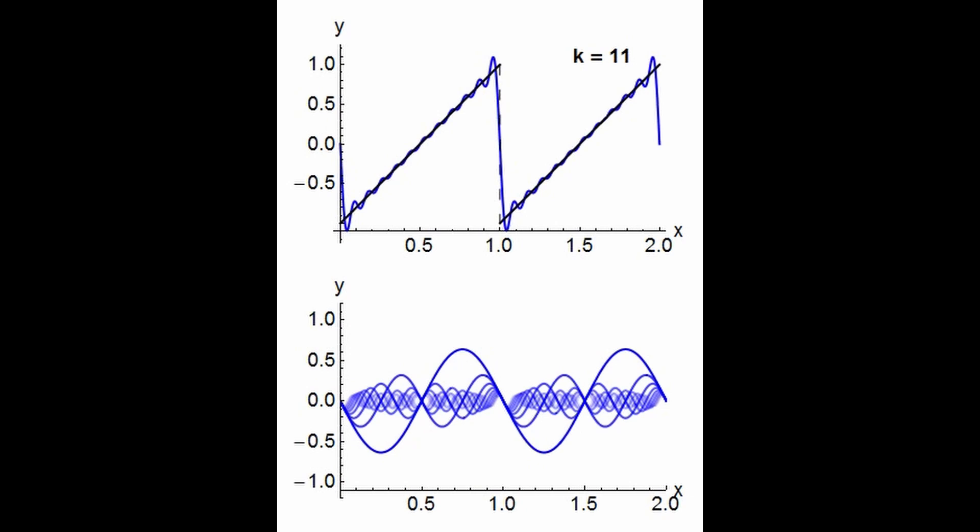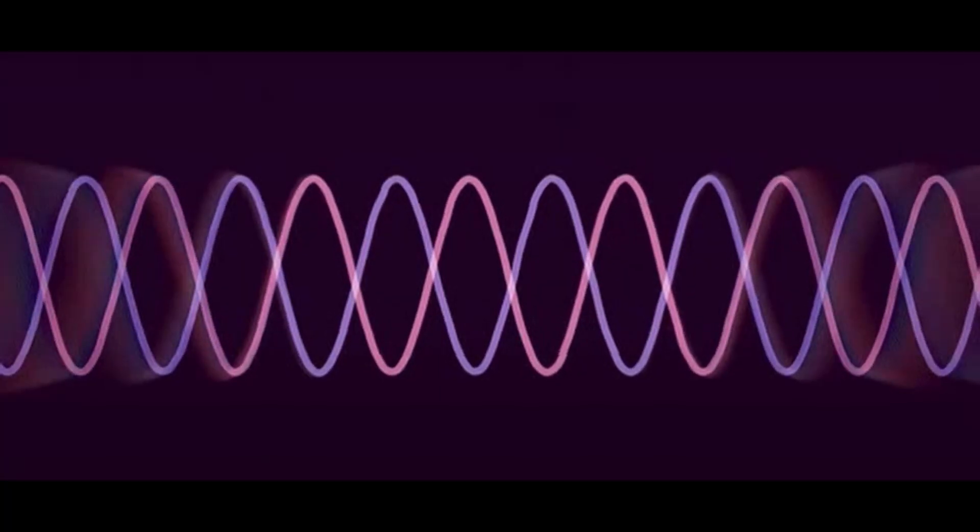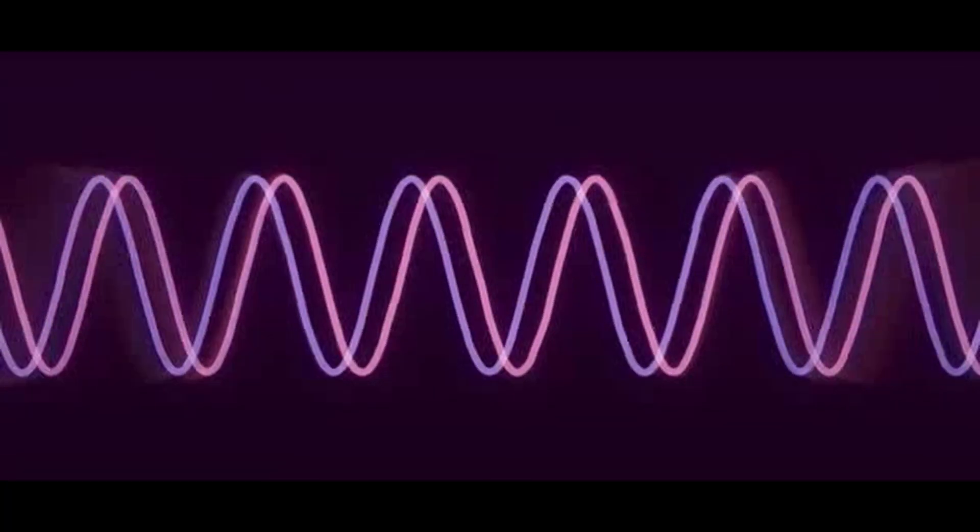The Fourier transform can be written as f(ω) equals the indefinite integral from negative infinity to infinity of f(t)e^(iωt)dt, where f(t) is the original function, f(ω) is the Fourier transform of f, and ω is the frequency variable.